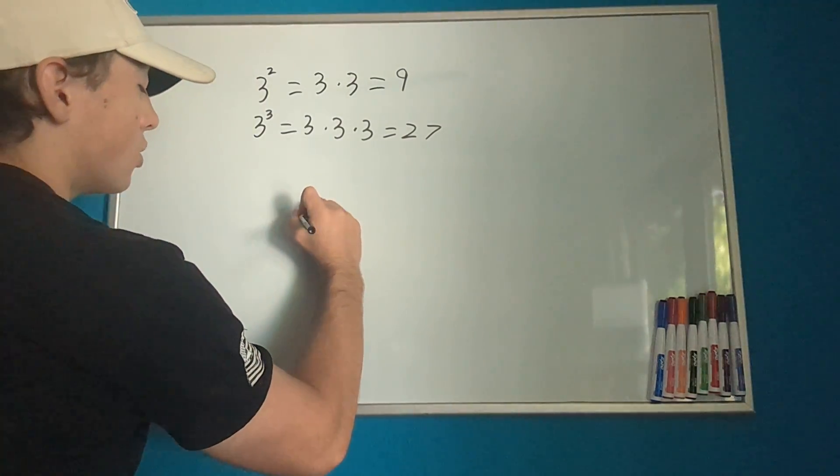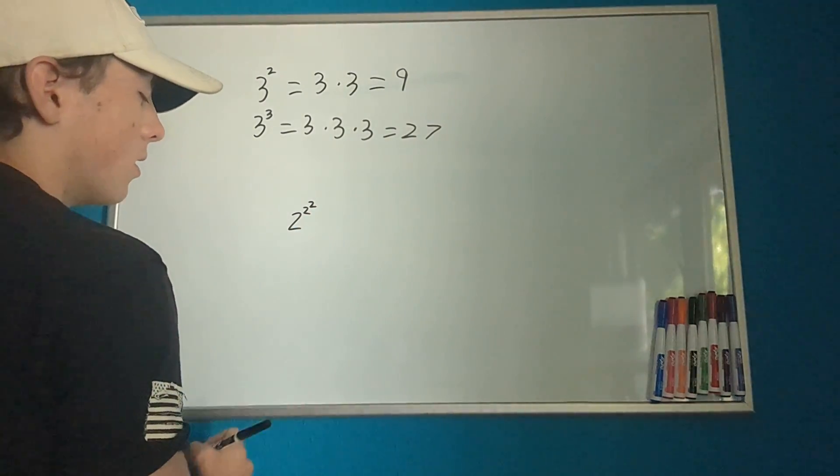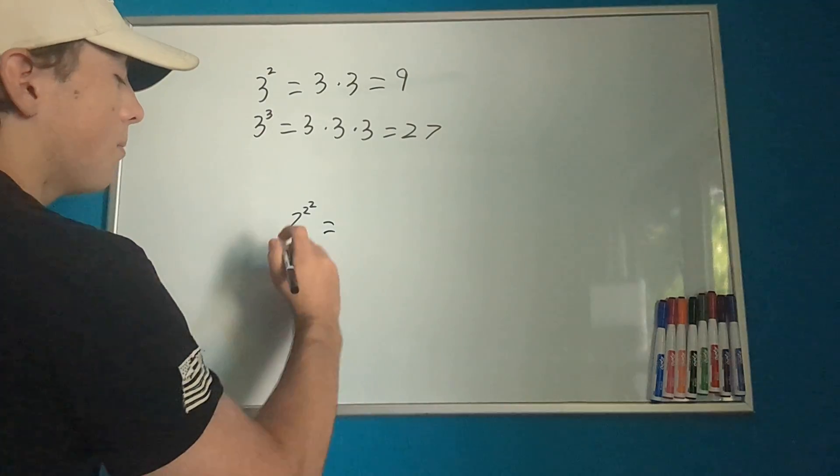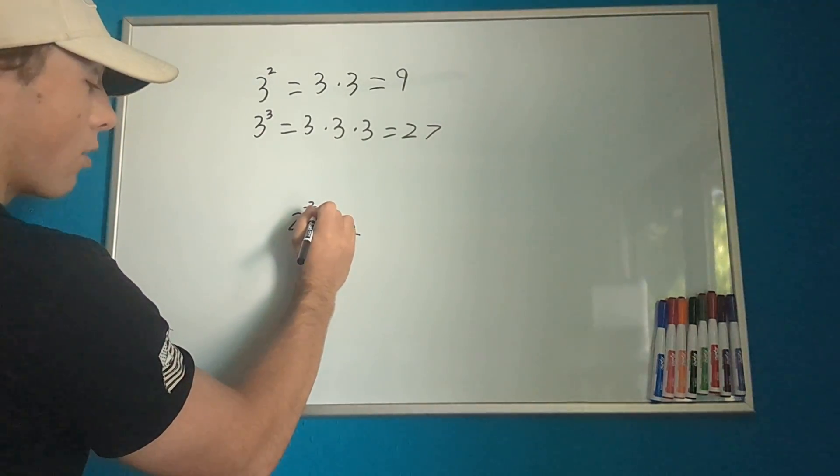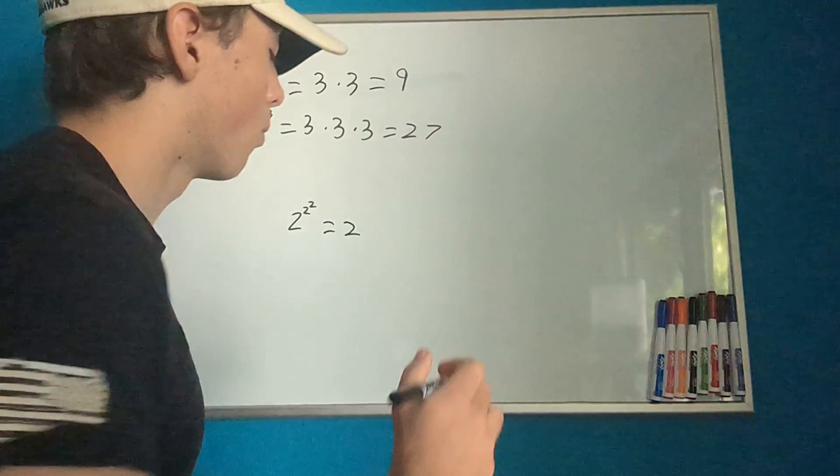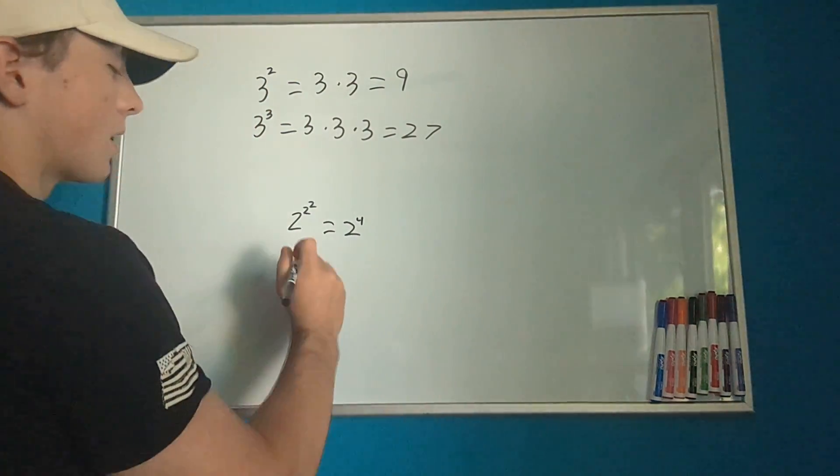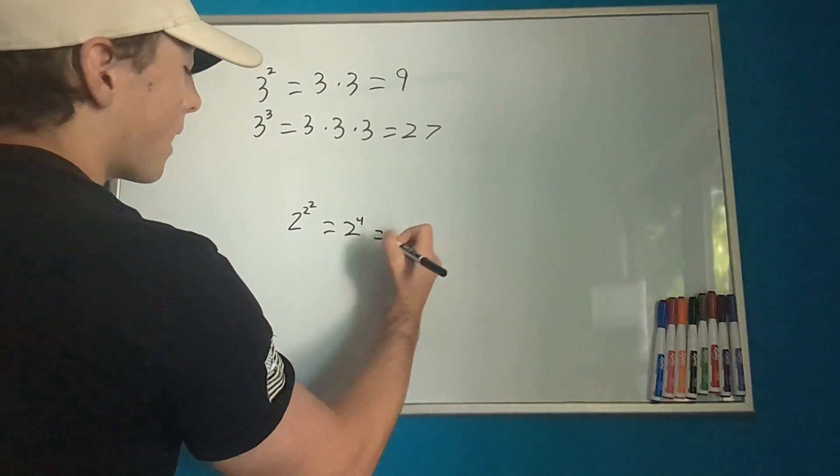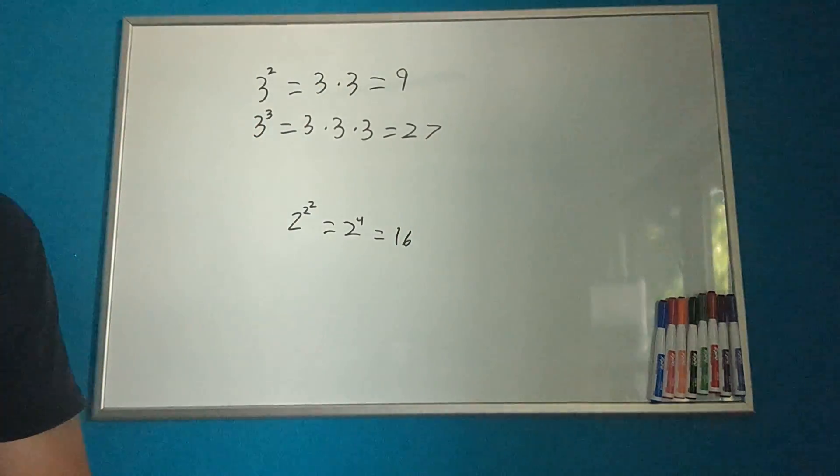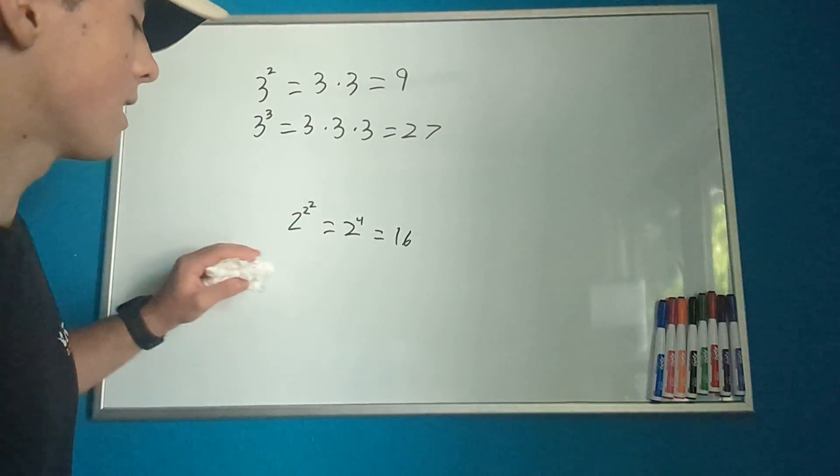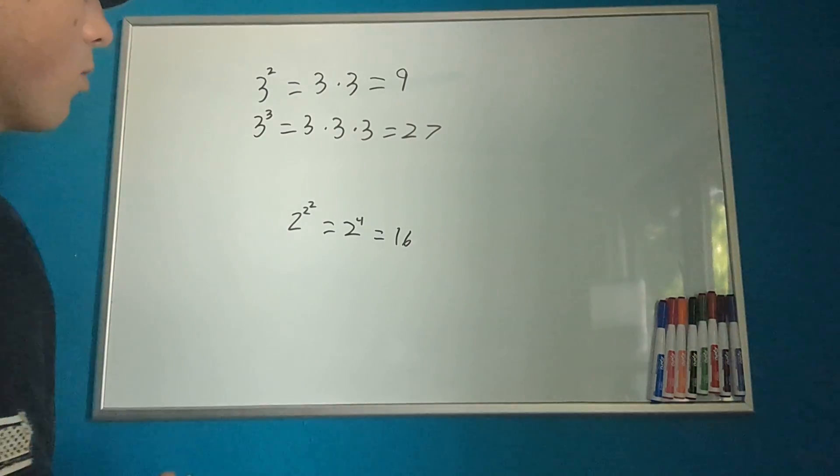If we have 2 to the 2 to the 2, that is the same thing as 2 to the power of 2. 2 to the power of 2 is 4, so that's the same thing as 2 to the 4. And then this is the same thing as 16, so we can rewrite that as 16, or 2 to the 4.